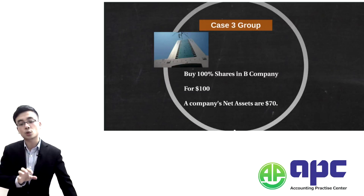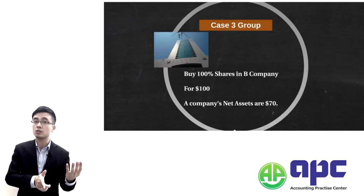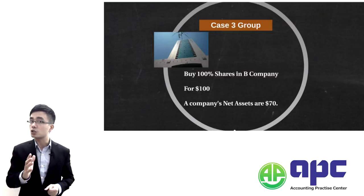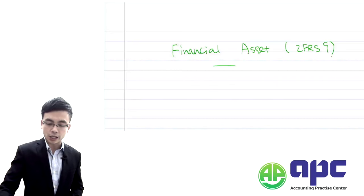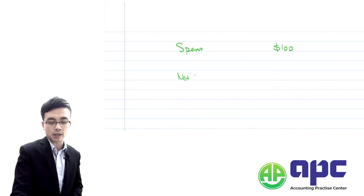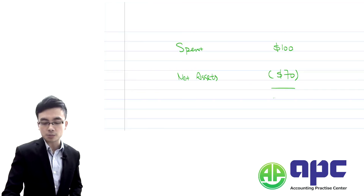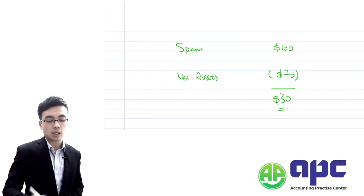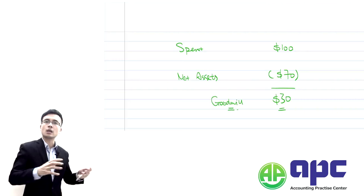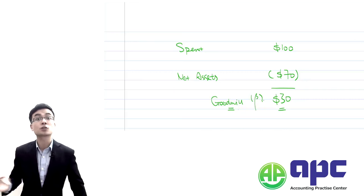We spent $100 to buy equity or net assets at the date of acquisition worth $70. So we spent $30 more to buy their equity — that $30 extra we're going to call Goodwill. We put that into non-current assets within the consolidated SFP. The balancing figure is called Goodwill.